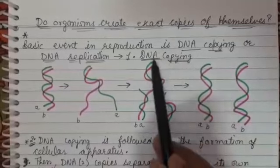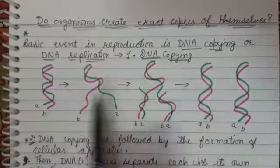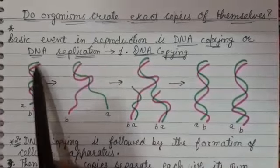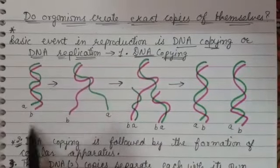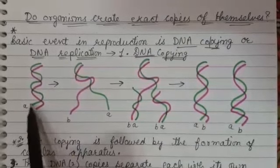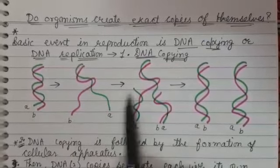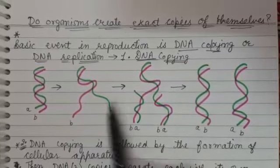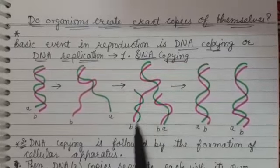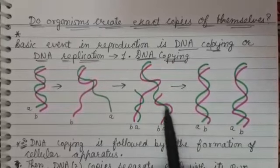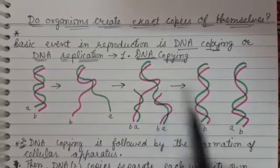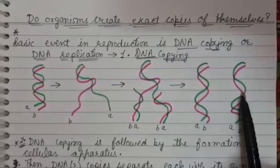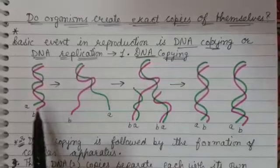The first step is DNA copying. DNA copying means the formation of more copies of DNA from a single strand. Students, DNA is made up of two strands. For its replication or copying, these two strands are separated and new alternate strands are formed.